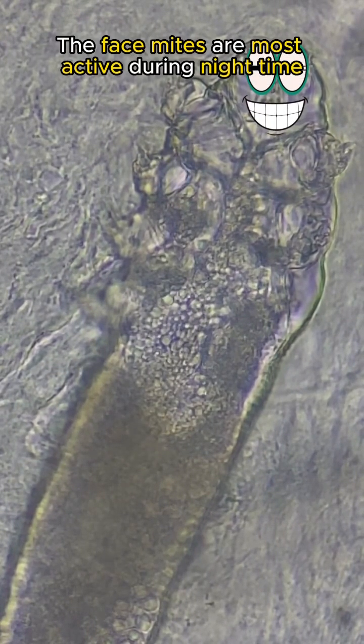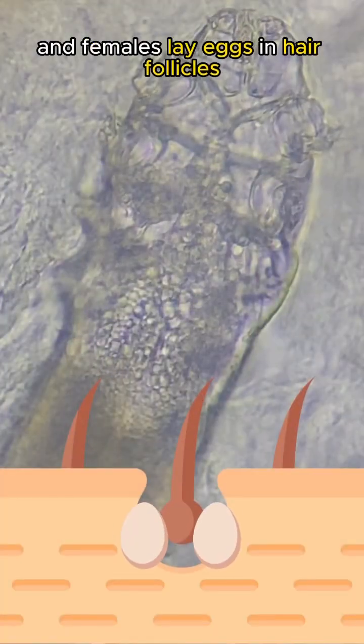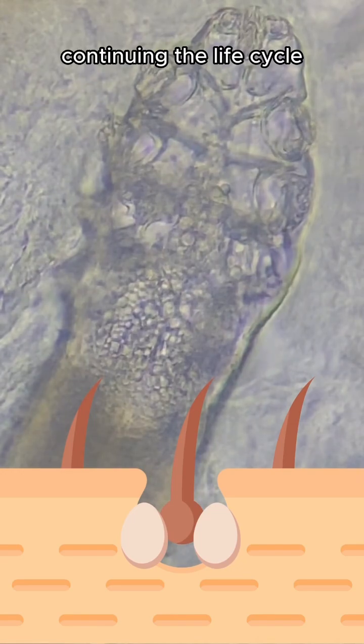The face mites are most active during nighttime and reproduce through sexual reproduction. Females lay eggs in hair follicles, continuing the life cycle.